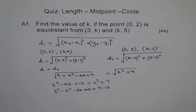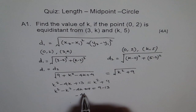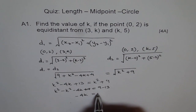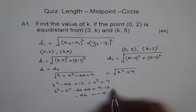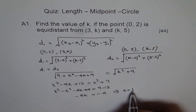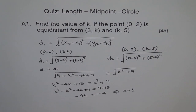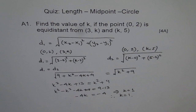k square minus k square is 0, so we are left with minus 4k. We get minus 4k equals minus 4, which implies k equals 1. Therefore, k equals 1. That is the solution. Thank you.